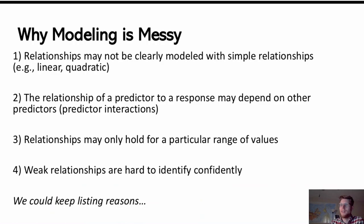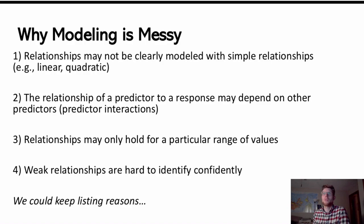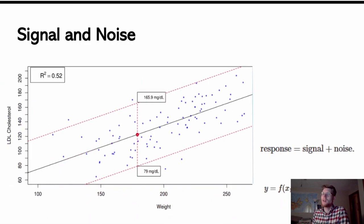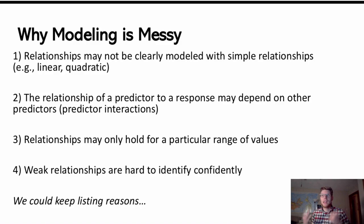Modeling is kind of messy, and there's a lot of reasons why that's the case. One reason is that relationships may just not be clearly modeled with simple relationships, with linear or even quadratic relationships or these other relatively easy terms that we can add. Over here, we like to look at these really simple examples where we have this clearly linear relationship that looks very constant across the entire range. But the truth is that's not always the relationships that we're working with. They can be complicated.